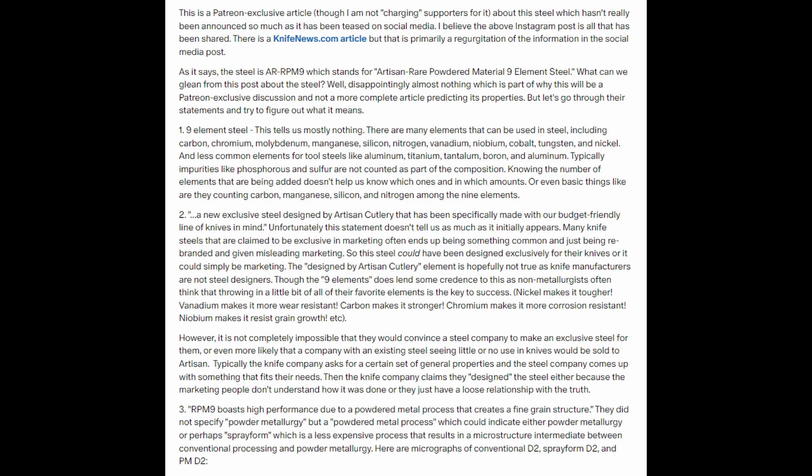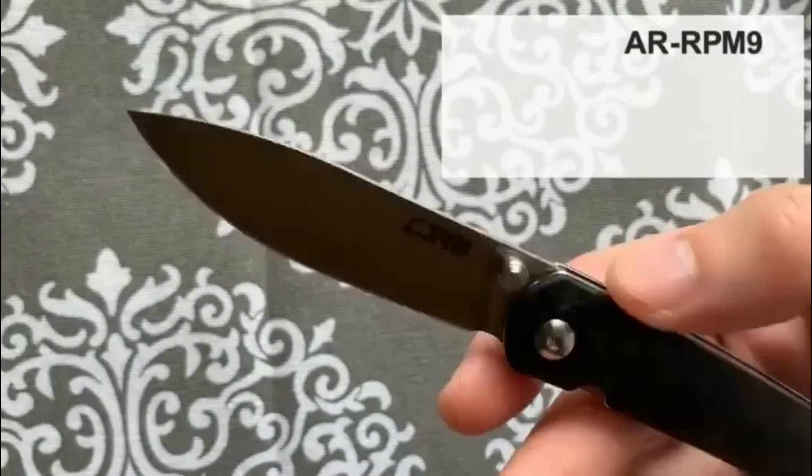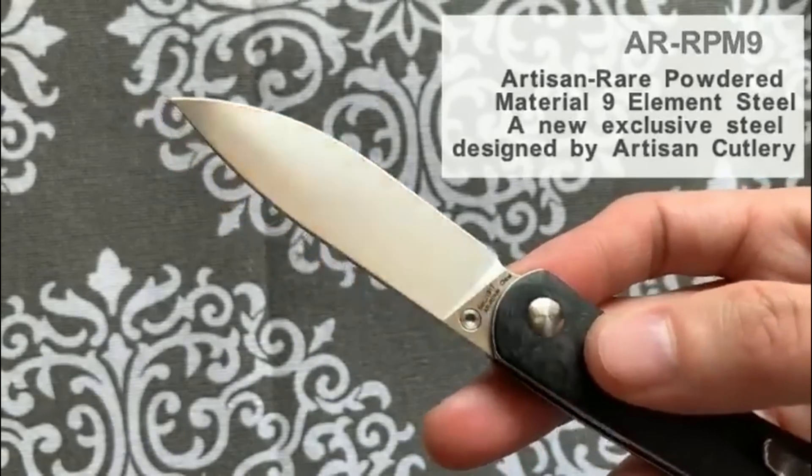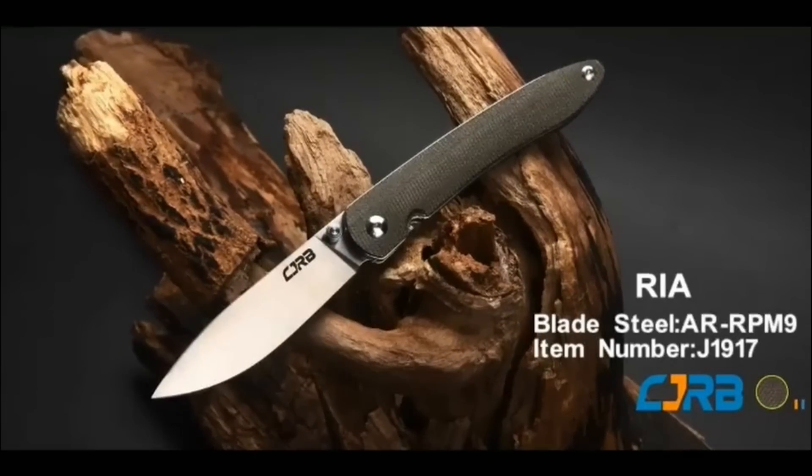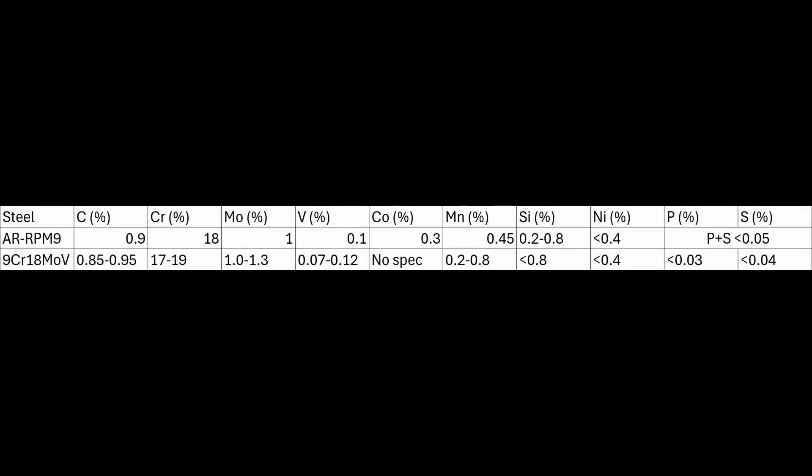So it was a few months before they actually announced it. But in September of that year, 2020, they released the composition to an Instagram video. They claimed this was a new exclusive steel that they designed with their knives in mind. Nine Elements was quite a bit, so I was intrigued by what this might be. But it was pretty underwhelming. The composition they specified is identical to 9Cr18MoV, identical to the European specification 1.4112, and pretty similar to the American steel 440B.